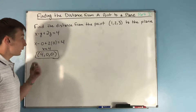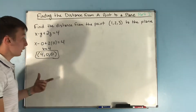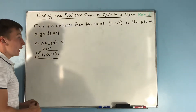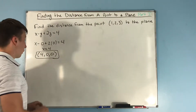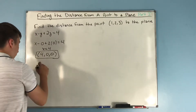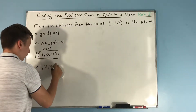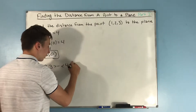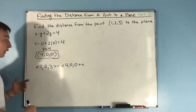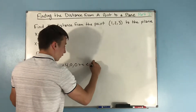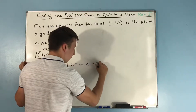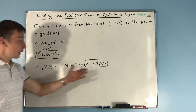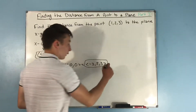Now with this point, what we can do is find the vector that goes from this point to this point. We take the position vector (1, 2, 3) and subtract it from the position vector for (4, 0, 0). That gives us (-3, 2, 3). This is our vector b.